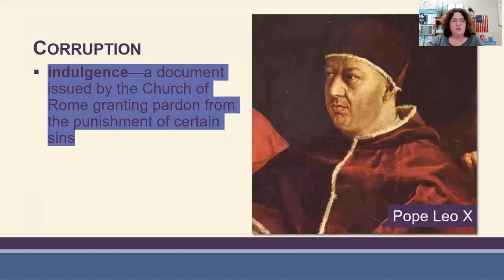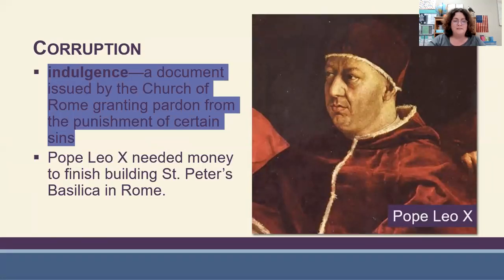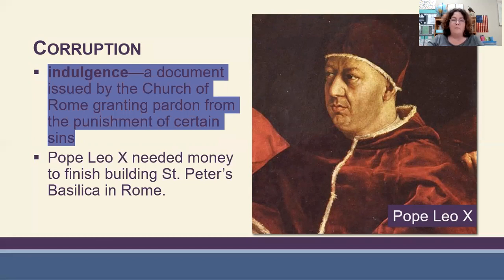Another form of corruption: the church began selling indulgences — documents issued by the church granting pardon from the punishment of certain sins. Pope Leo the Tenth needed money to finish building Saint Peter's Basilica in Rome, so he started selling these indulgences. They found their way to Germany, where a pastor named Martin Luther opposed them. He wrote down his opposition and nailed it to the door of the church — the tradition at the time for expressing conflict with church officials — and that began the Protestant Reformation.